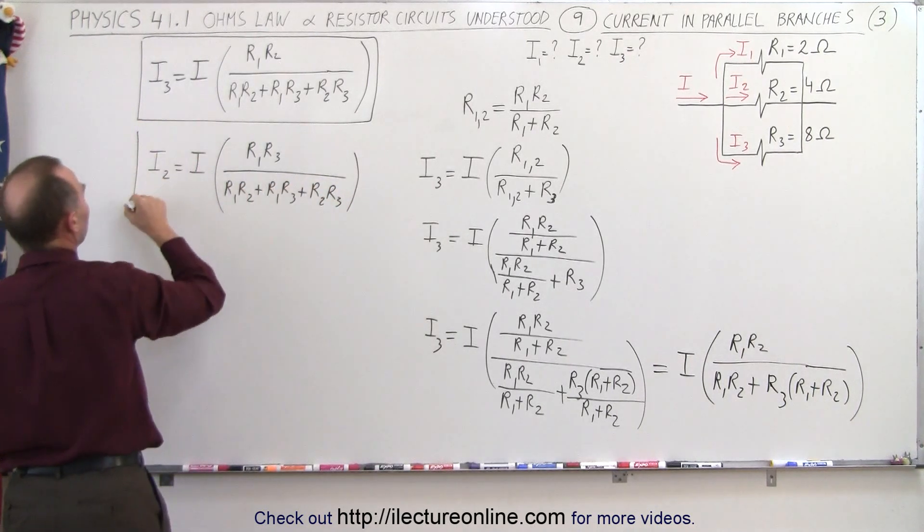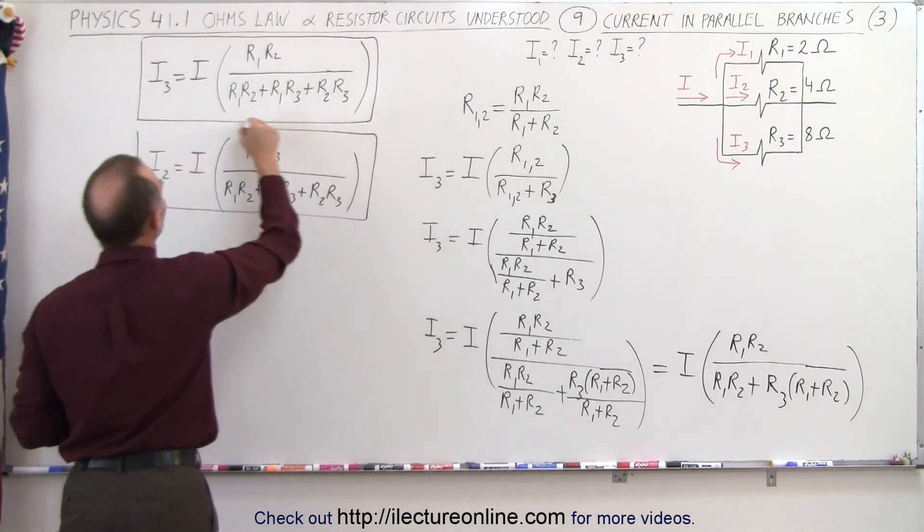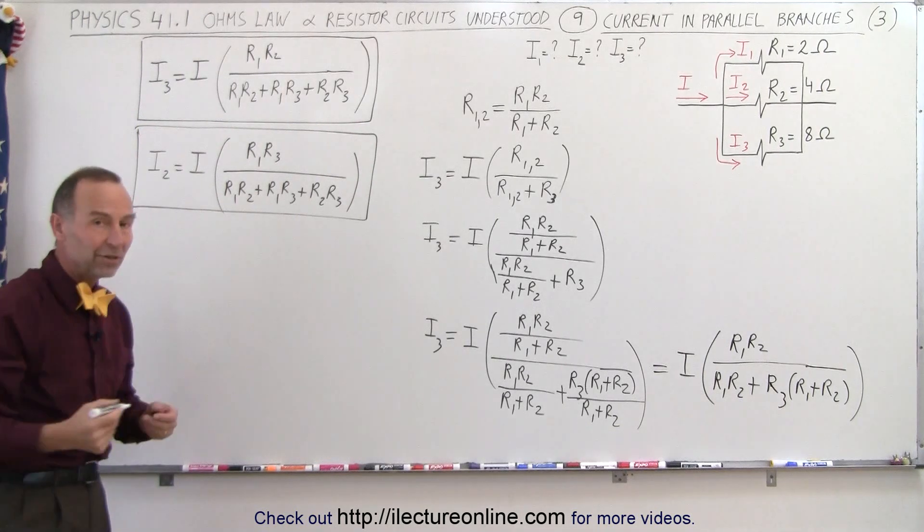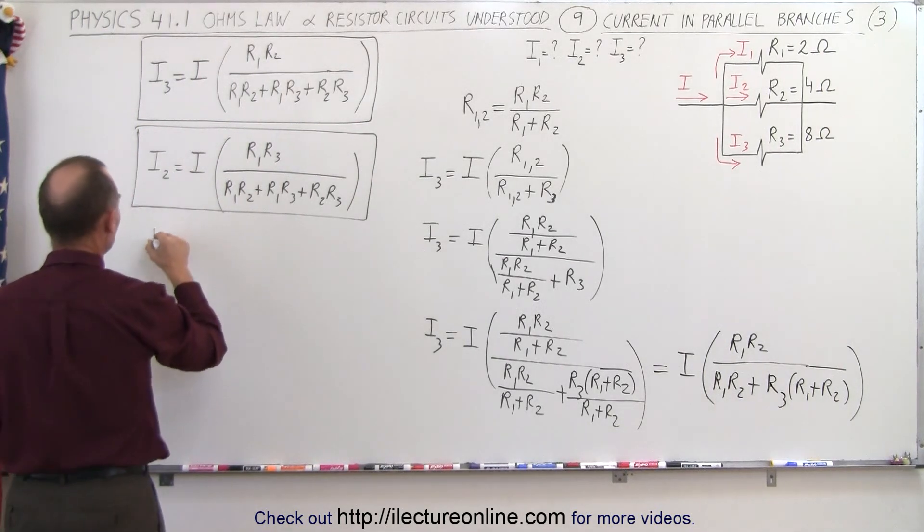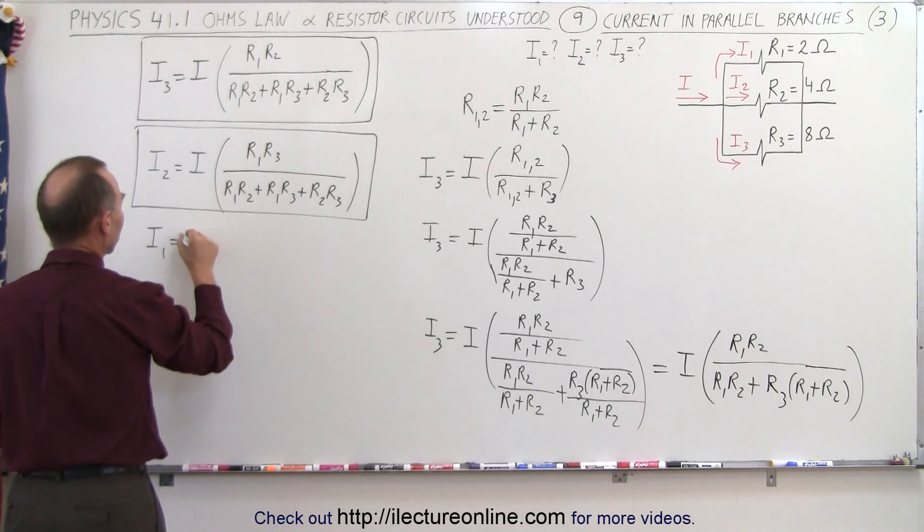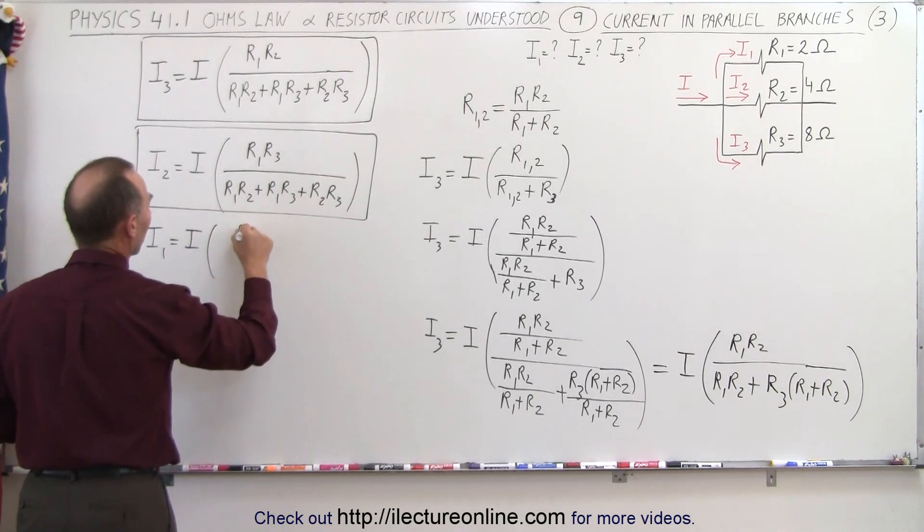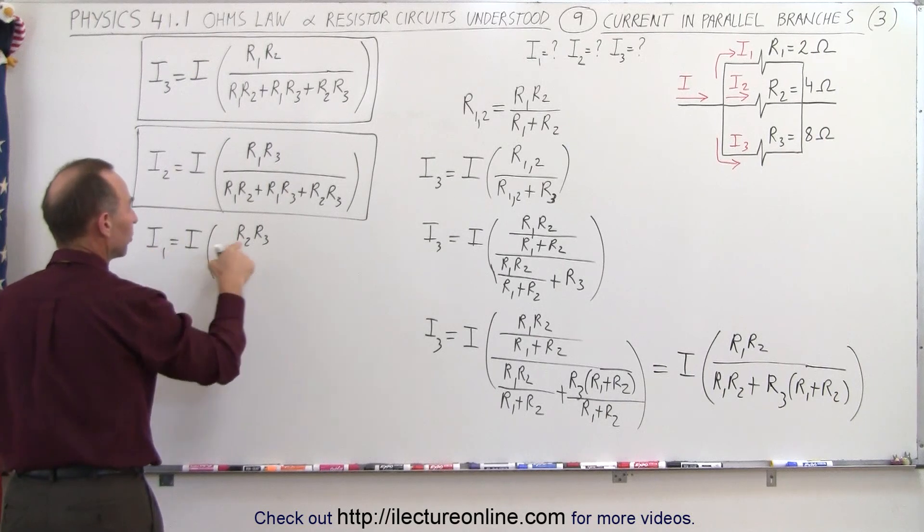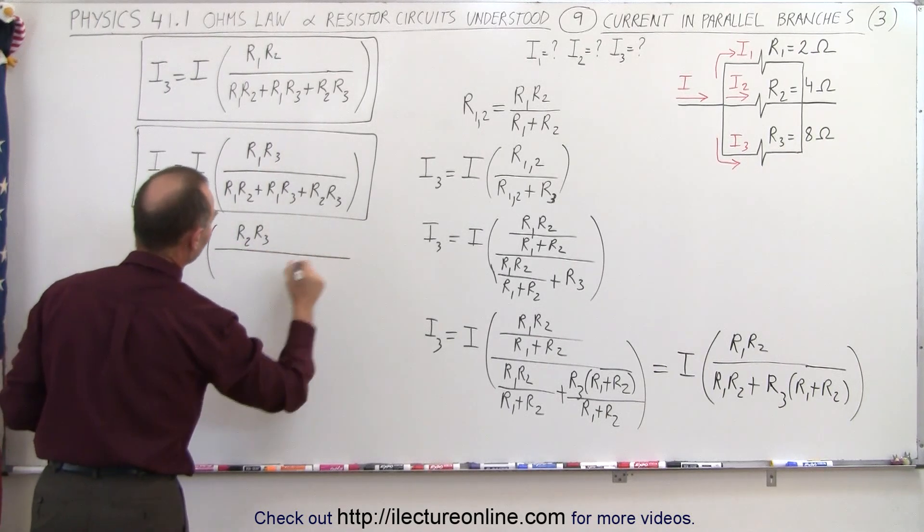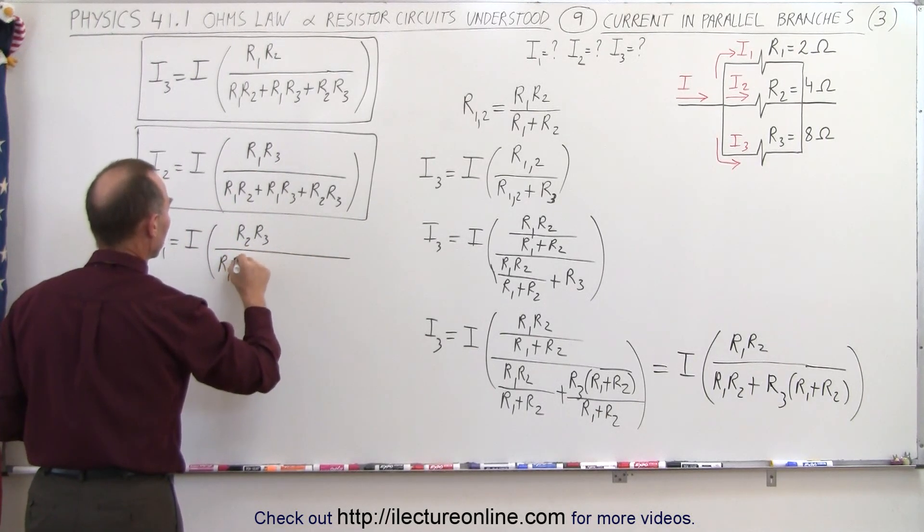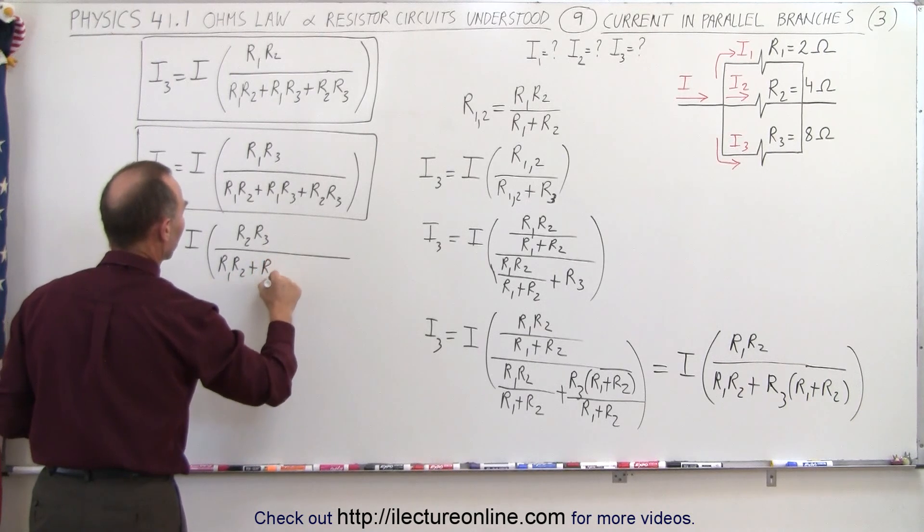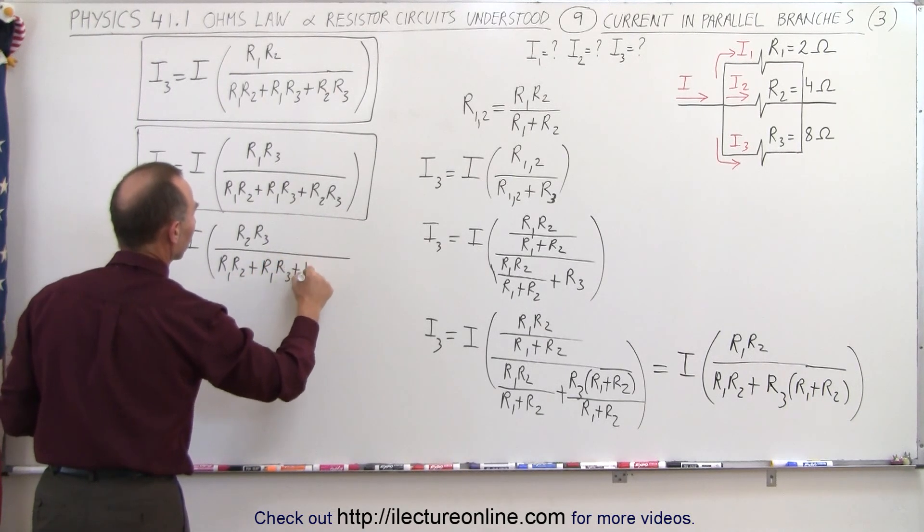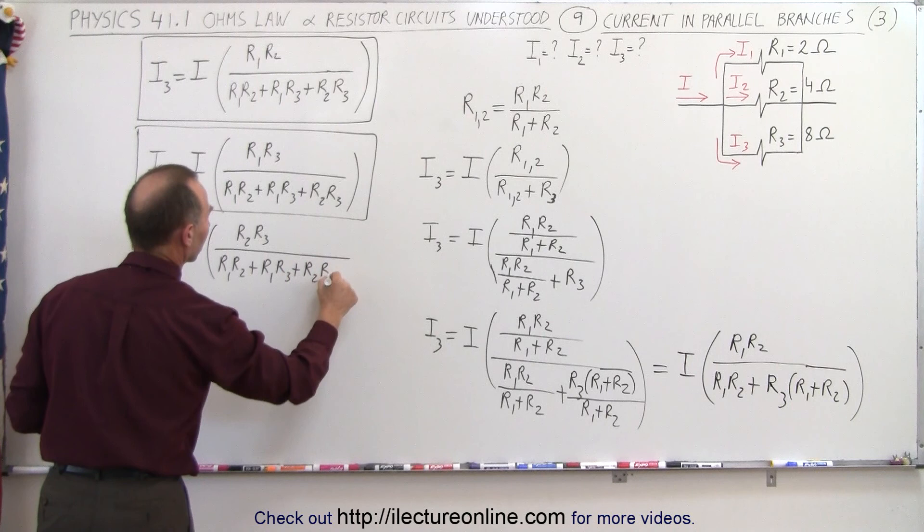And to find the current in the top branch I1, we find it as follows: I1 equals I times R2 times R3. So whatever current we have here, that number does not appear in the numerator, divided by R1 R2 plus R1 R3 plus R2 R3.